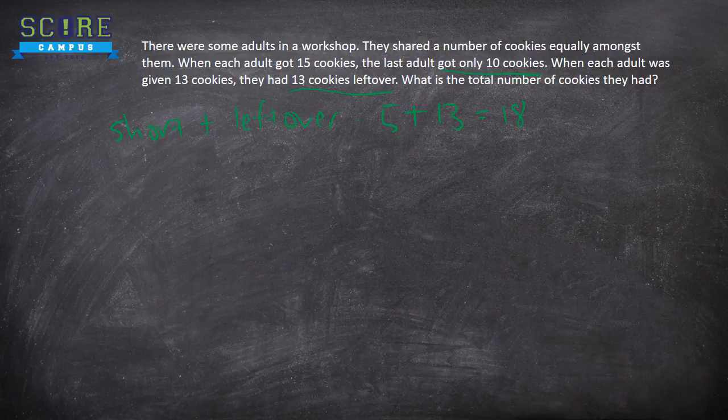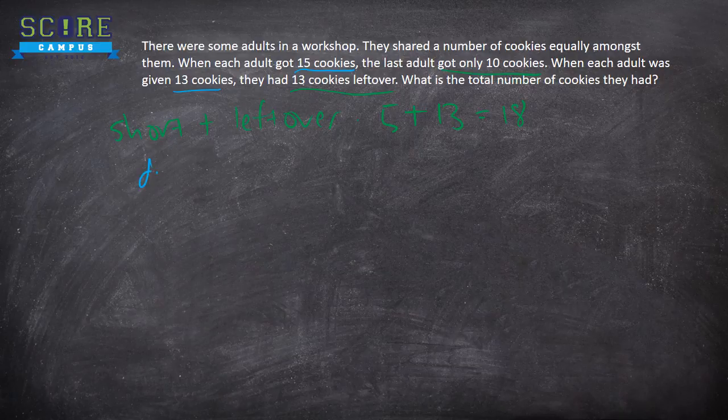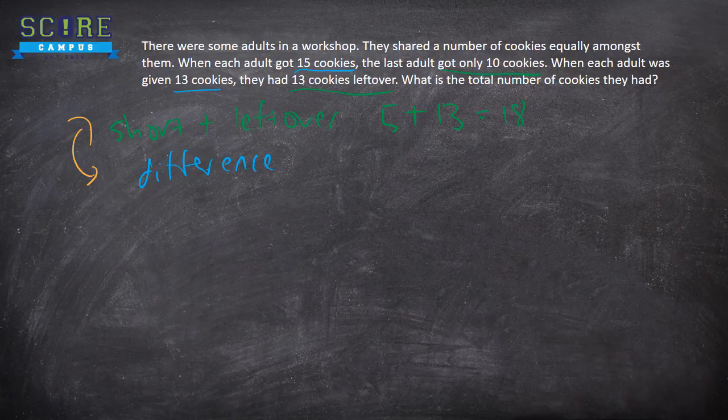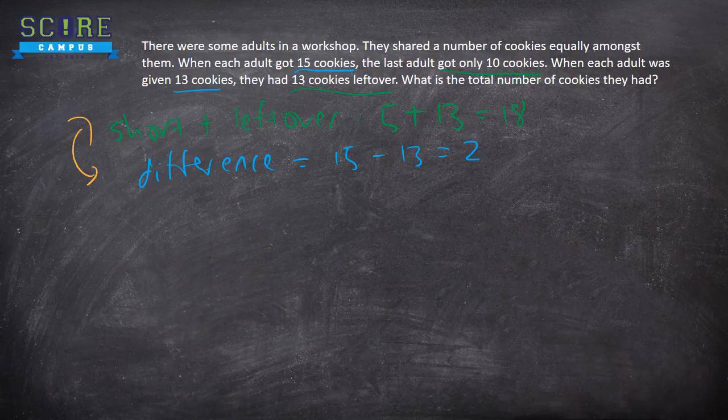Next thing you can do is, oh, I mixed up the steps a bit. The next thing you can do is 15 minus 13. This is the difference. In the previous slide, I had done these two steps. Yeah, I mean, that's fine. You can do it either or. Difference equals to 15 minus 13 equals to 2.